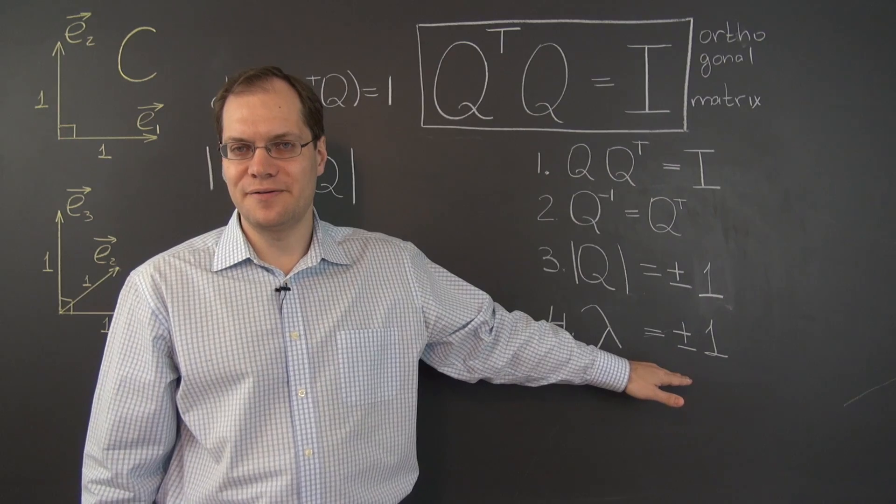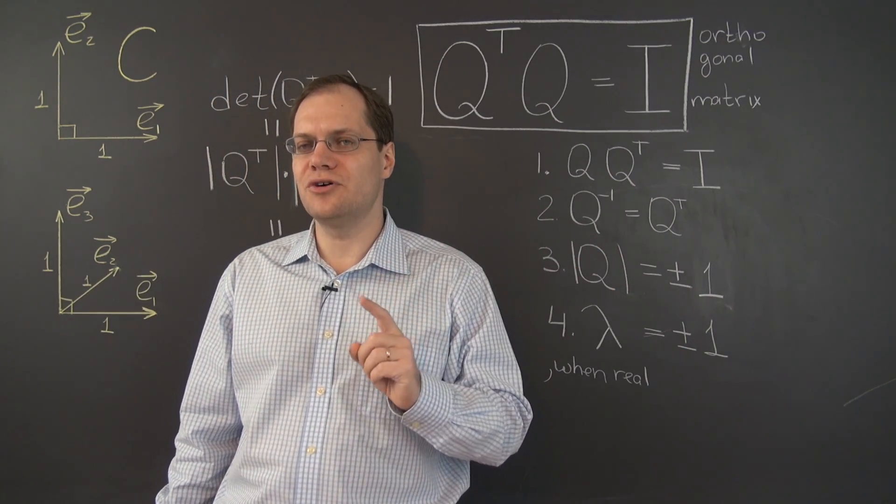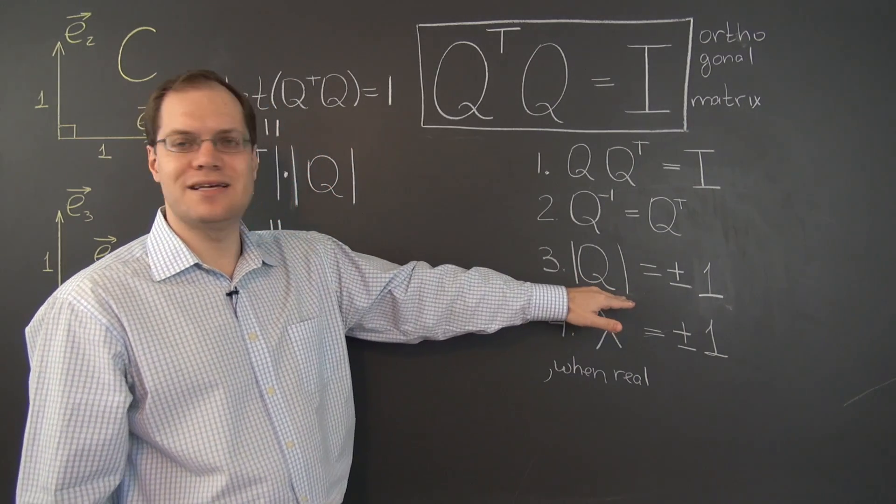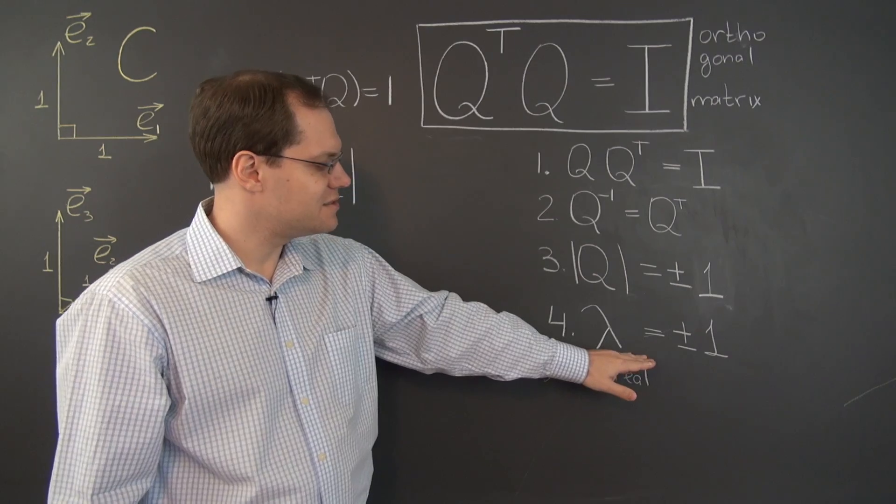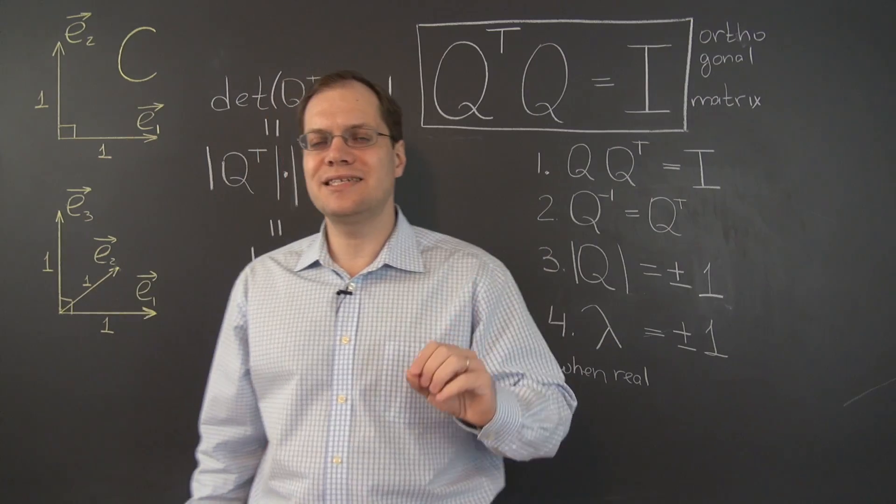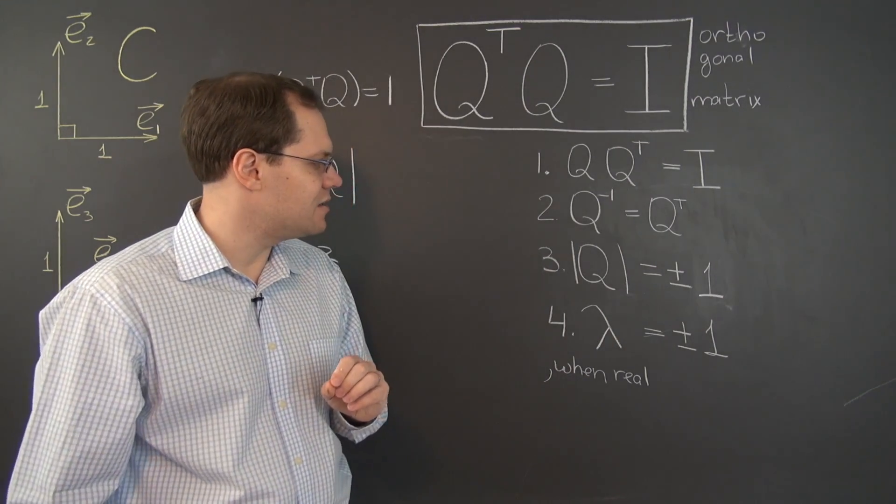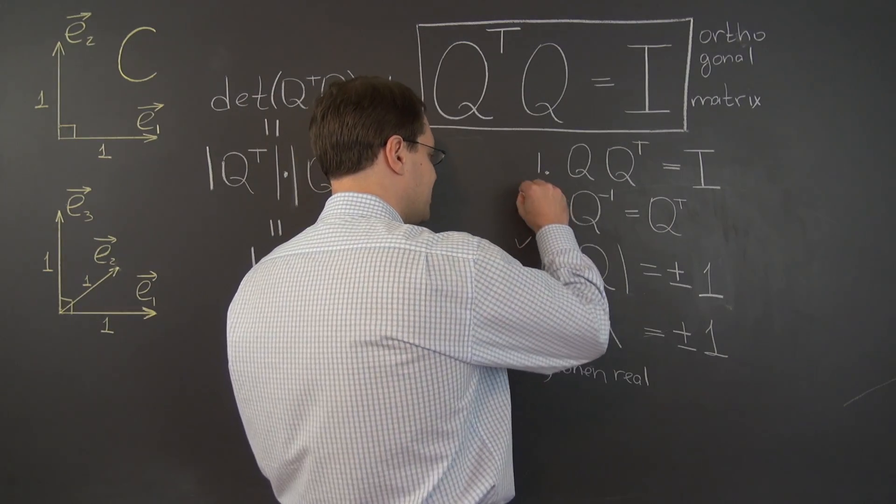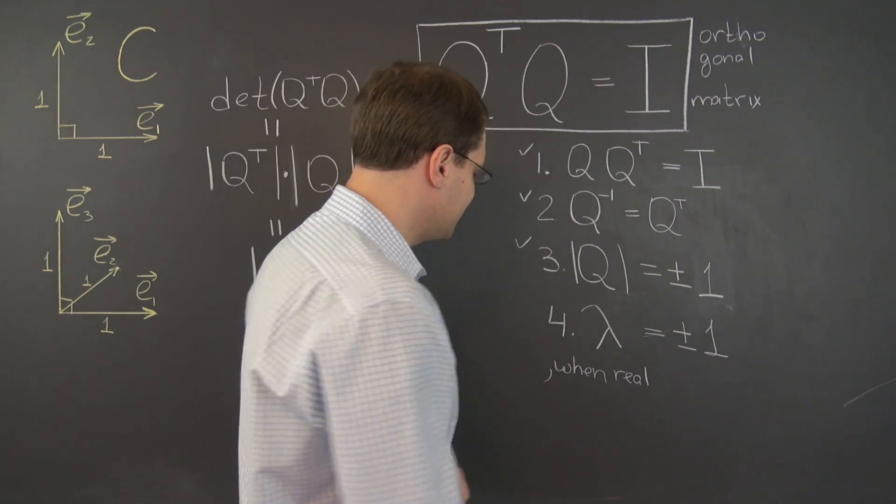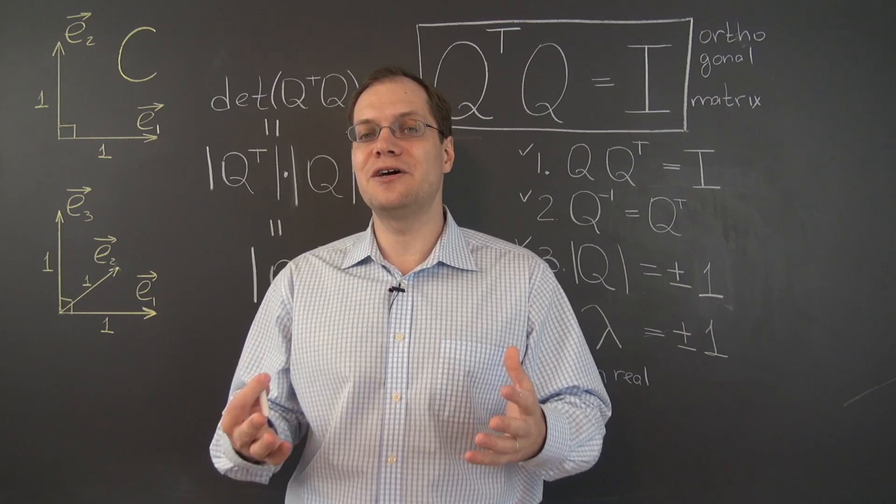This, by the way, does not depend on the choice of the basis. This probably does, but this does not depend on the choice of the basis because the eigenvalues are dictated 100% by the linear transformation itself. I'll put check marks next to properties that require the basis to be Cartesian, and this one, maybe put a star here, is a little bit more universal.